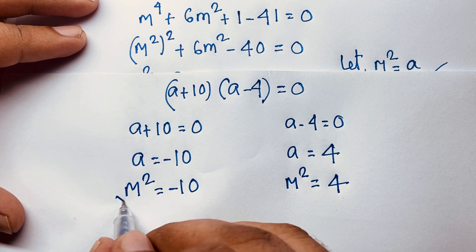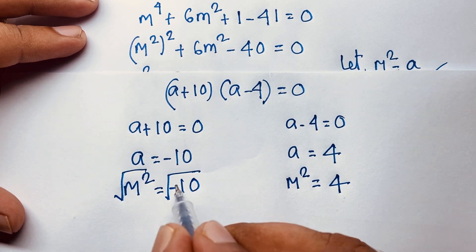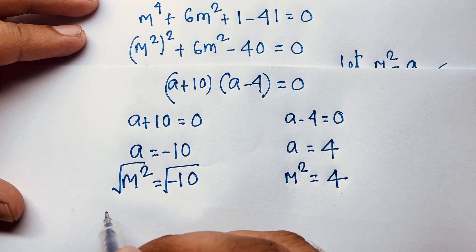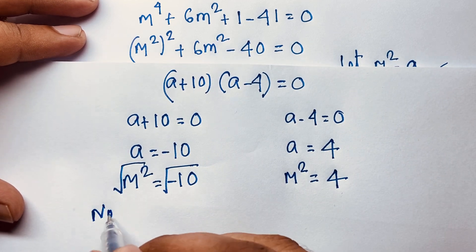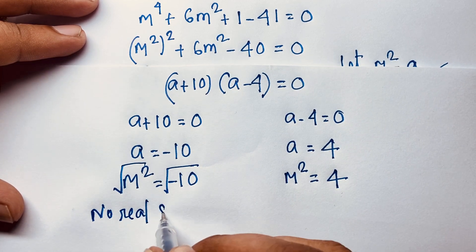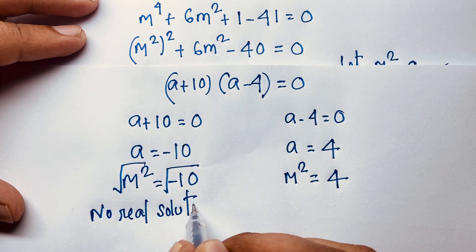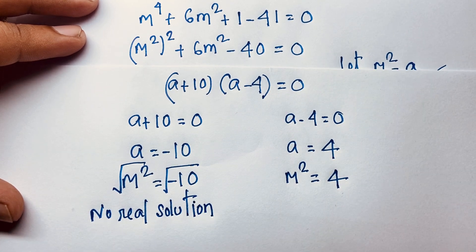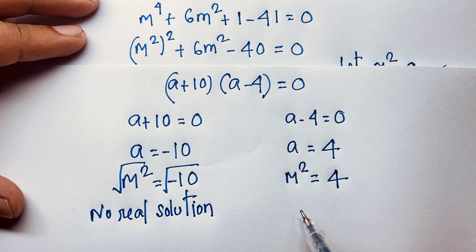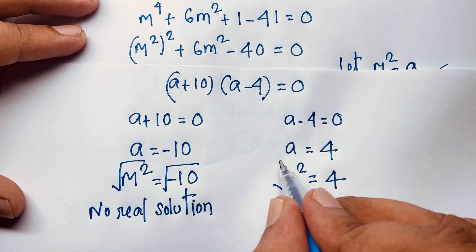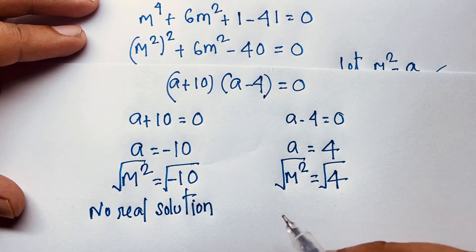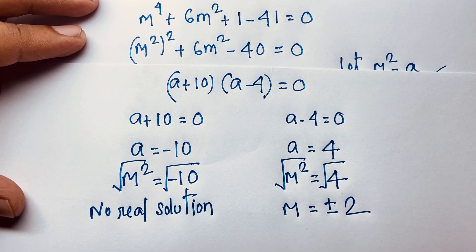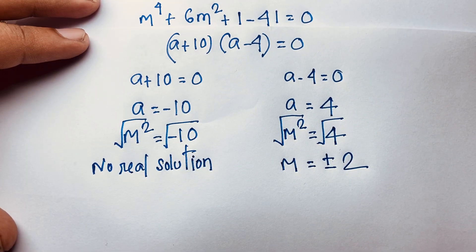If I use the square root for m^2 = −10, we will find out here is a complex number — it is the imaginary part — so no real solution. We will need a real solution. For m^2 = 4, taking the square root gives m = ±2.